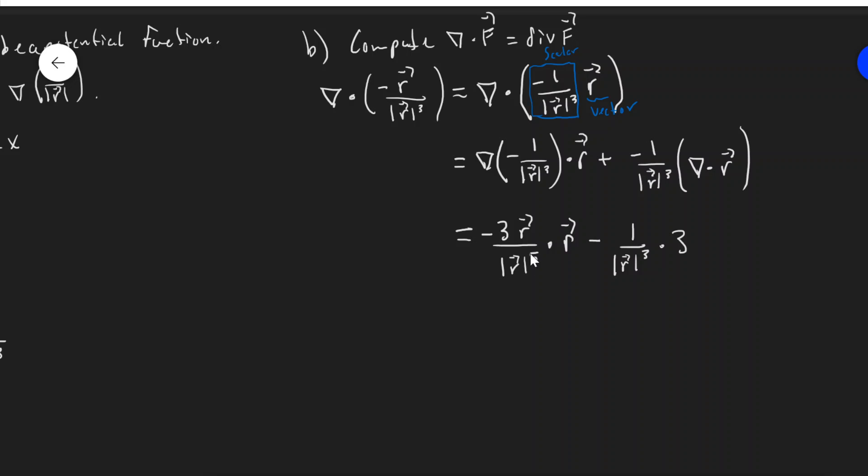So we can handle this first term. So I see I have R dot R here. I can pull these scalars out. I have R dot R, which remember gives magnitude R squared. So this is minus three magnitude R squared over magnitude R to the fifth, minus three over magnitude R cubed.